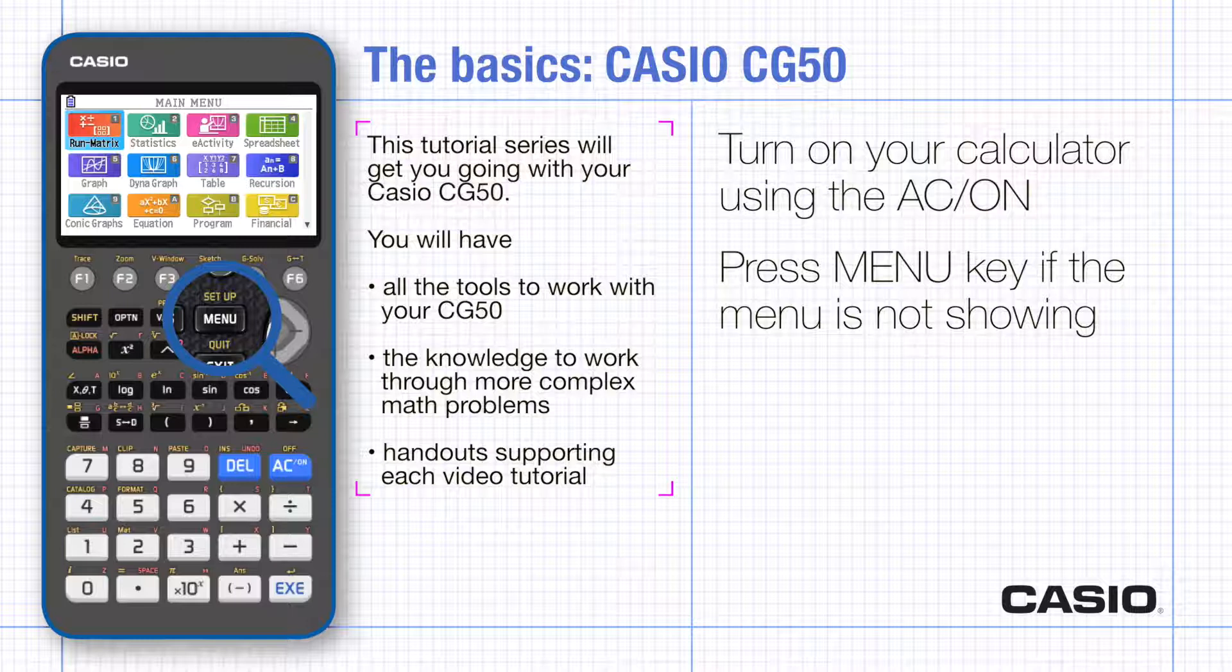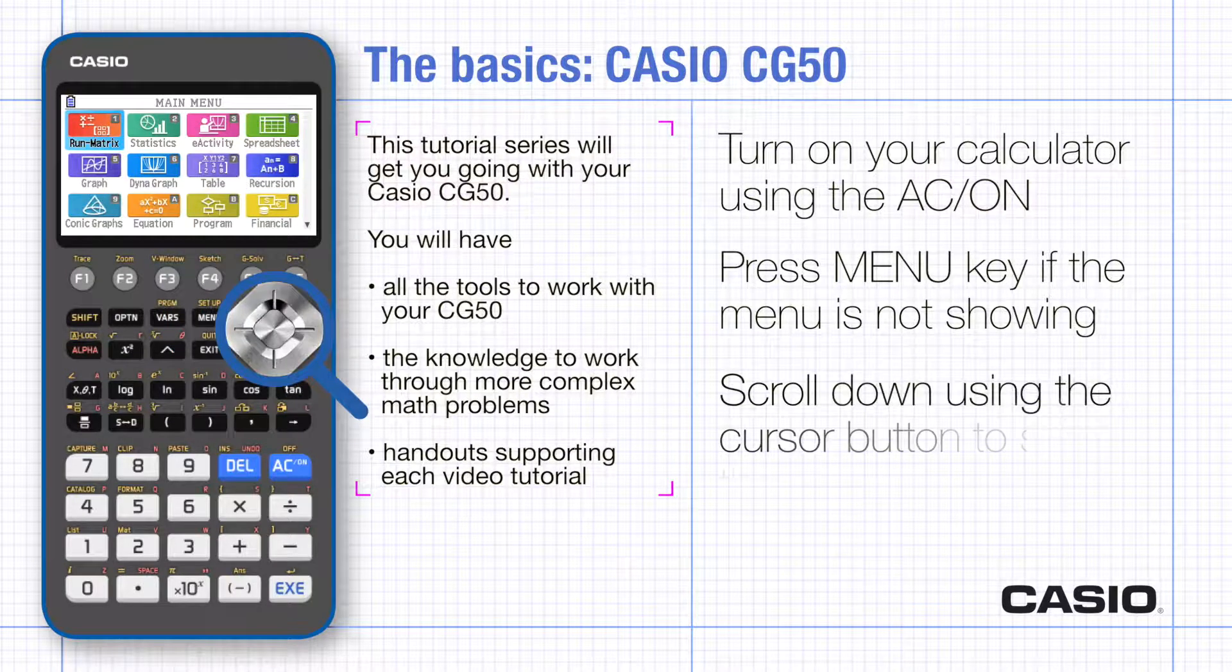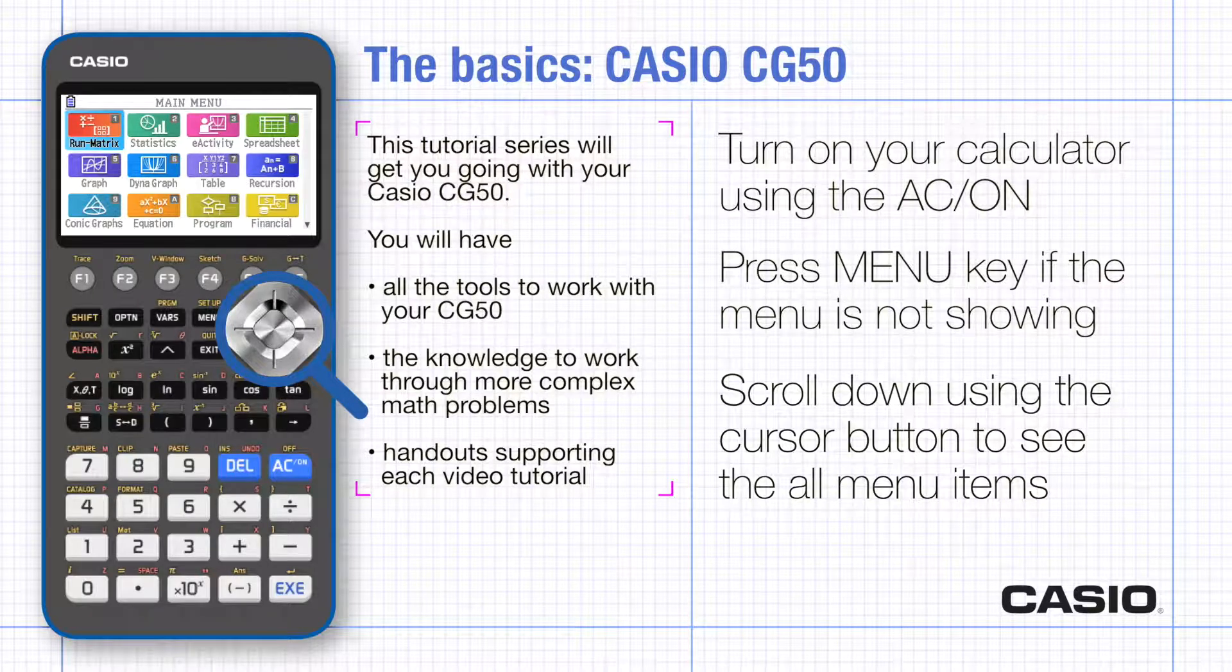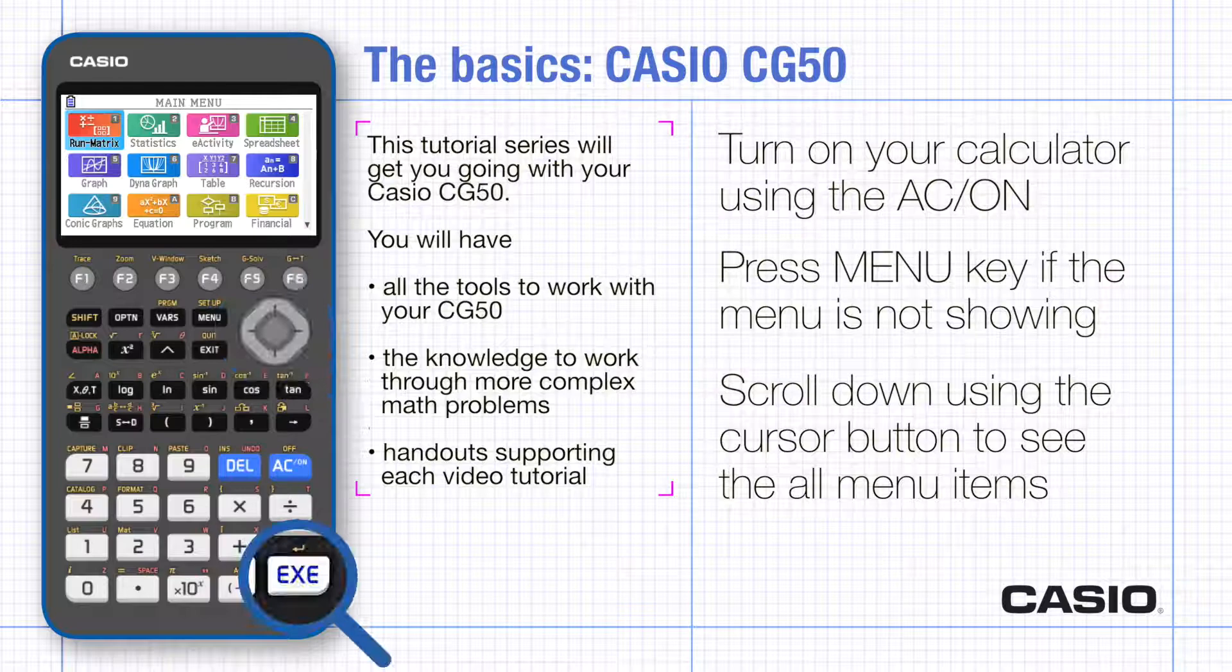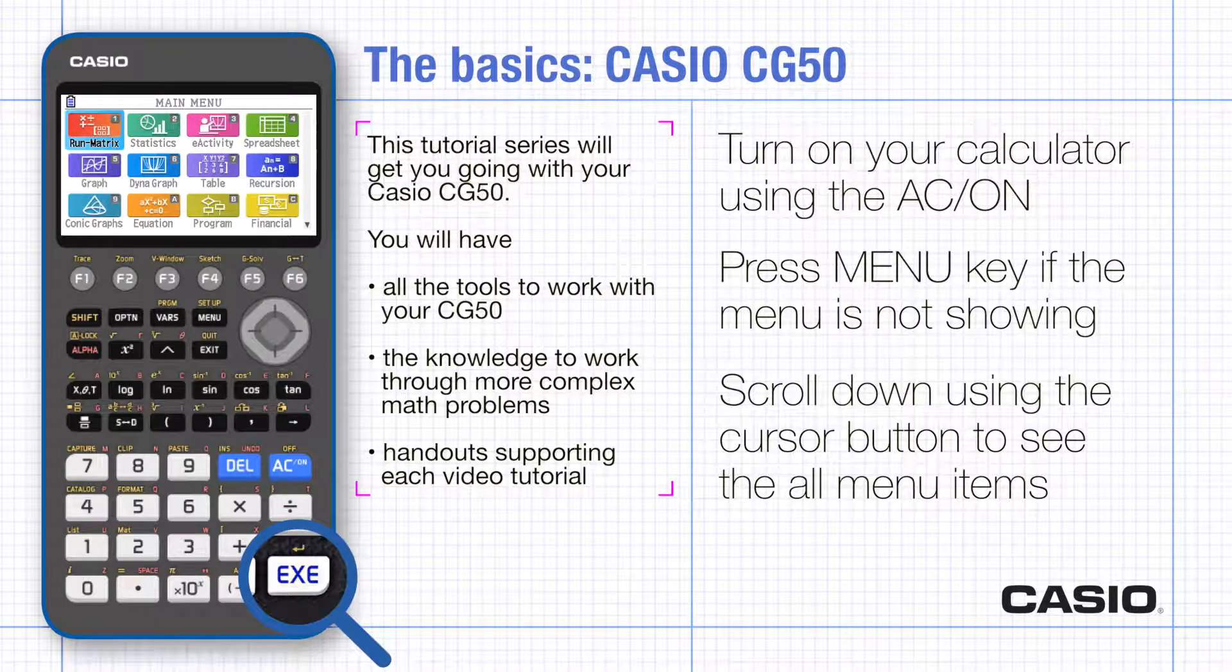You can look back through the 21 menus. You have to scroll down to see them all using the cursor button to navigate. You can select a menu by moving the cursor and pressing the execute key or by typing the number or letter label that it has.